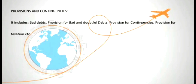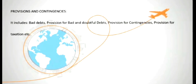The next item is provisions and contingencies. This does not form any schedule. It includes bad debts, provision for bad and doubtful debts, provision for contingencies, provision for taxation, etc.